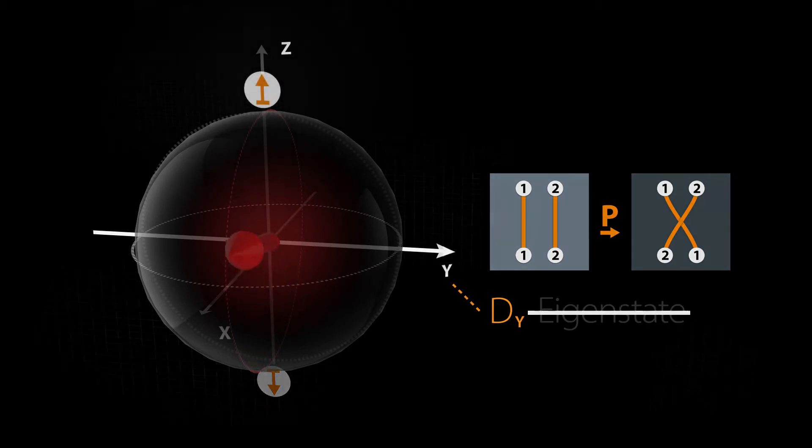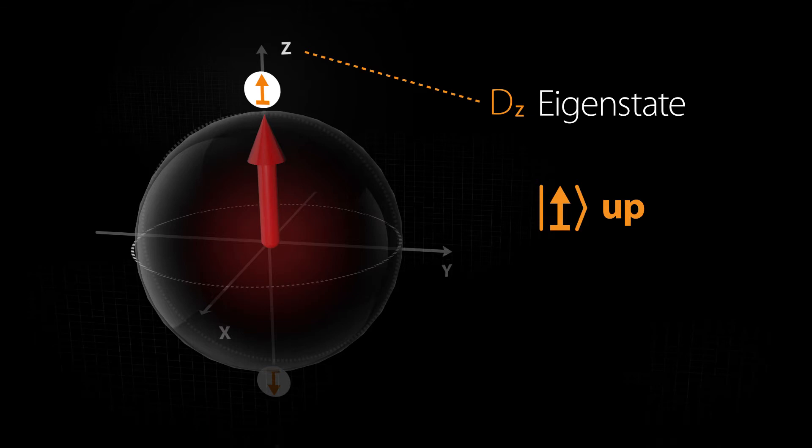However, spin up is an eigenstate for a rotation around the z-axis. Spin up stays where it is. The direction of spin does not change.